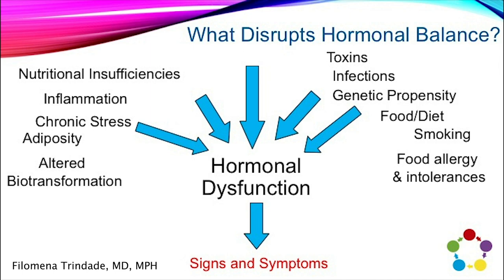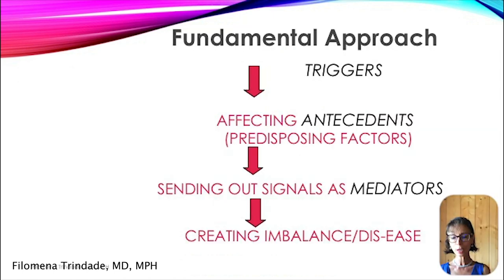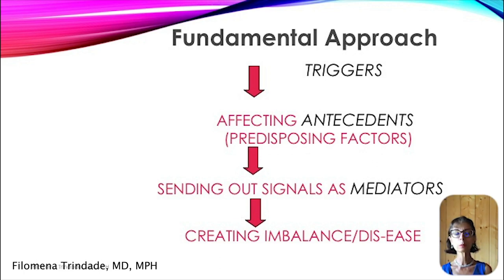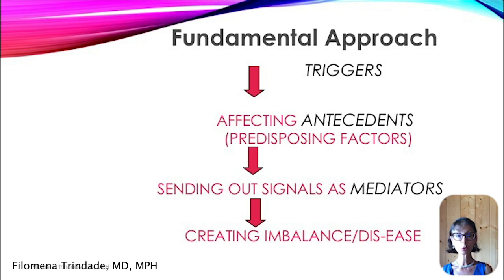We're connecting the dots between symptoms and physical exam findings to come to an understanding of what the dysfunctions are. With functional medicine, we talk about ATMs — antecedents, triggers, and mediators. We want to figure out what triggers are affecting their history and genetics, because antecedents are your predisposing factors — it could be diet, a habit like smoking. Triggers can be infections, food sensitivities, nutrient deficiencies, or a hormone imbalance in one area affecting a separate hormone.